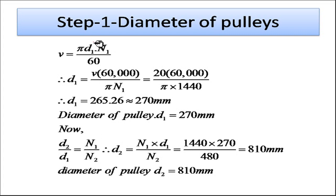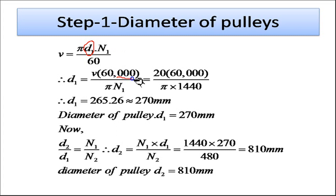In the velocity equation, d1 is the only unknown. Rearranging: d1 = v × 60,000 / (π × n1), because we are considering diameter in mm and velocity in meter per second, so we multiply by 1000. This gives the input pulley diameter as 265.26 mm, which rounds up to 270 mm.